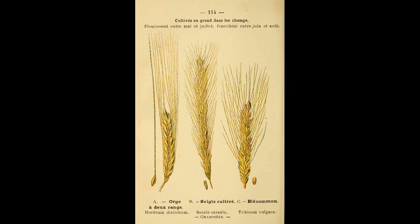In our modern era, hexaploid bread wheat dominates global wheat production. This type of wheat is derived from three diploid species in the tribe Triticae. These species include Triticum araraticum, Aegilops speltoides, and Aegilops tauschii — respectively known as the A-type, the B-type, and the D-type.